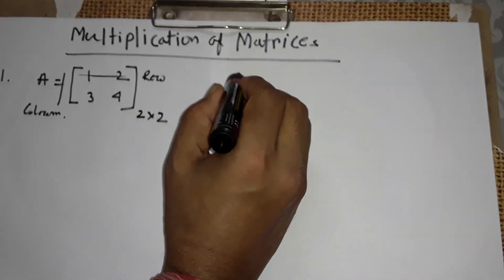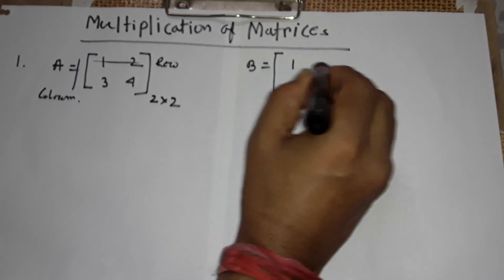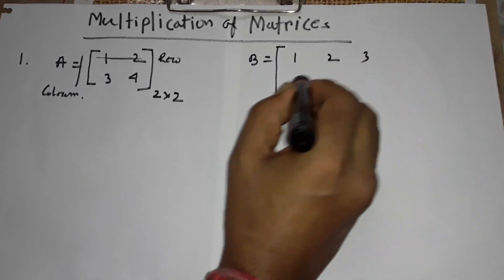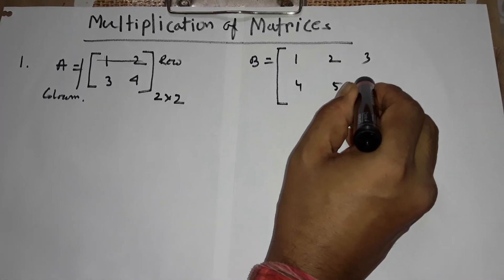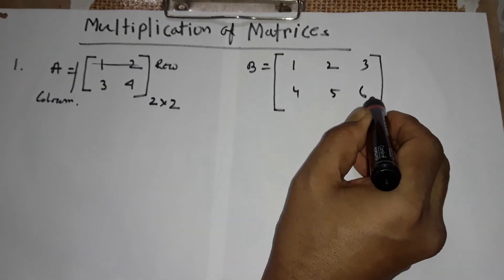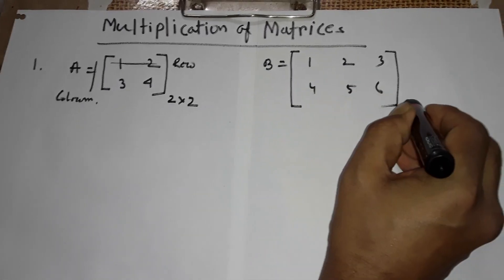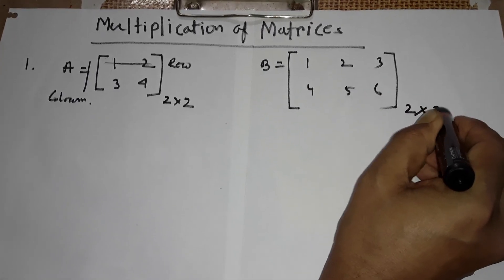Let another matrix B with elements 1, 2, 3, 4, 5, 6. Its row is this and column is this. That means its order is 2 into 3.